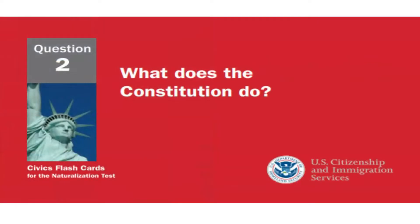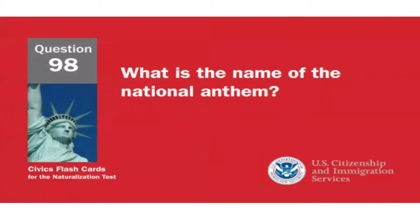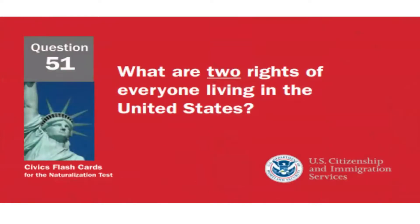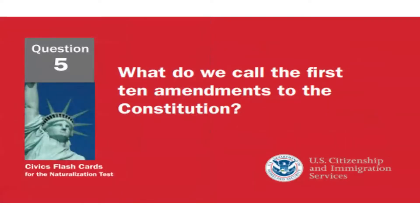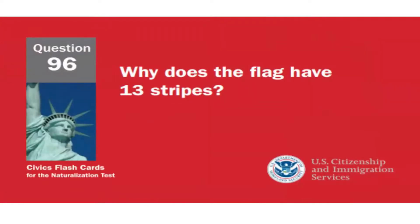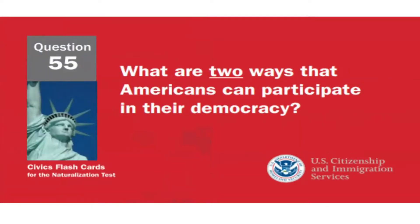Who vetoes bills? The president. What does the Constitution do? Sets up the government. What is the name of the national anthem? The Star-Spangled Banner. What are two rights of everyone living in the United States? Freedom of speech and freedom of religion. What do we call the first ten amendments to the Constitution? The Bill of Rights.